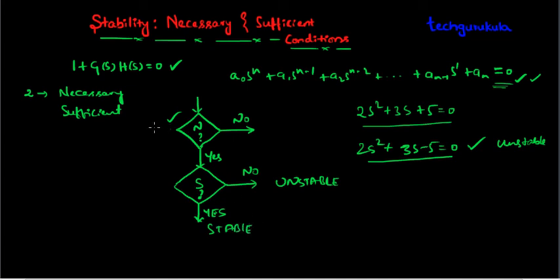And this necessary condition we have seen is basically looking at the signs of these equations. And there is a special case where some term is missing. Suppose here a₂ is 0 then you do not have this term. In that case what will happen we will see shortly.